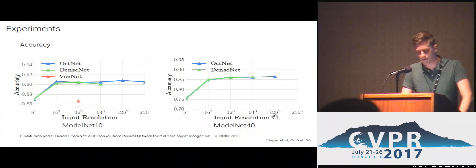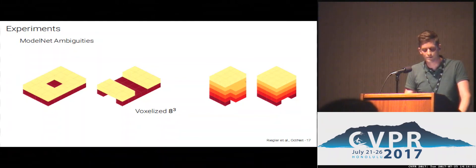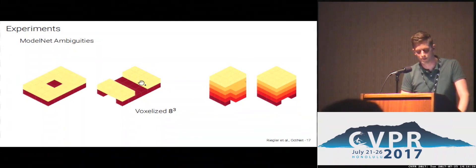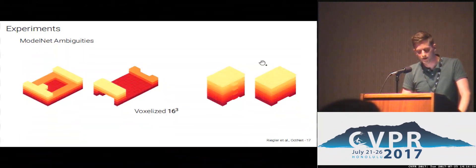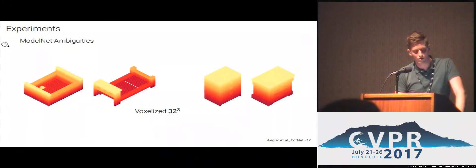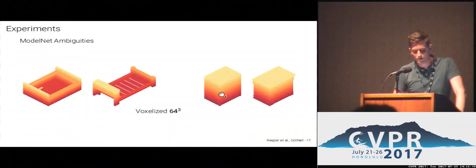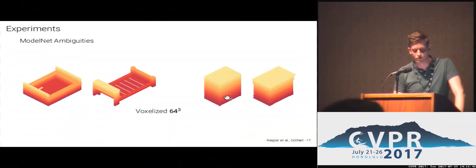We had a look at some shapes voxelized at very coarse resolution. At this coarse resolution, you cannot really distinguish the first two or the second two shapes. But increasing the voxelization just a little, you can already see that a bathtub is different from a bath. However, for even higher input resolutions, you cannot really distinguish a nightstand from a dresser.